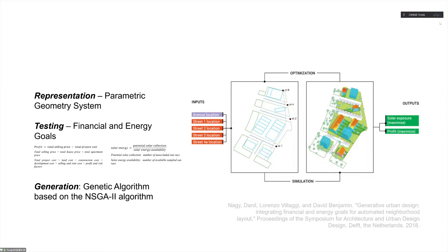A lot of so-called generative design or AI architecture designs follow this framework. Here are some early studies — this one is from Autodesk's generative group, where they used profit and solar energy metrics to measure whether rules could optimize generated urban layouts. This was back in 2018, and they were still using genetic algorithms — a rule-based algorithm to optimize urban layout results.